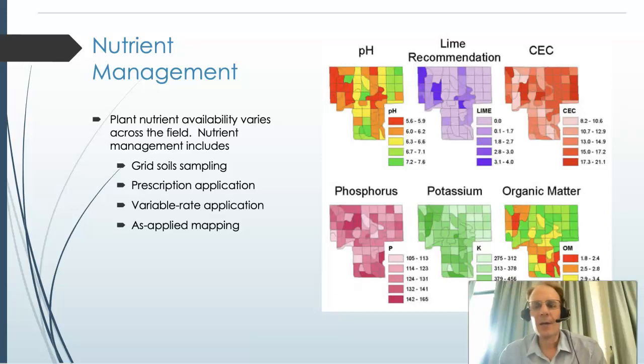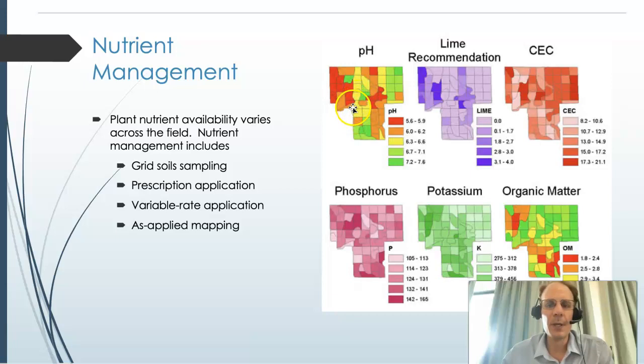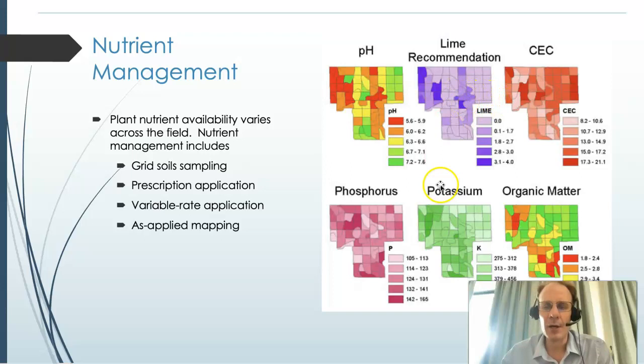We've talked about how our soil sampling allows us to create maps showing the variability of different soil properties across the field. In nutrient management, we take the grid soil sampling — or zones — and the nutrients or acidity and pH of those locations, and we develop what we call prescription applications.